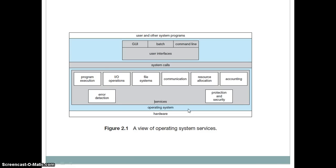Below that abstraction layer we have the part that actually runs the system — the operating system itself. As discussed, the operating system is an environment that provides services for programs or application programs to get their execution done. And below the operating system we have the hardware. So what are the interfaces, the system calls, and the operating system services? We're going to talk about each of those now.